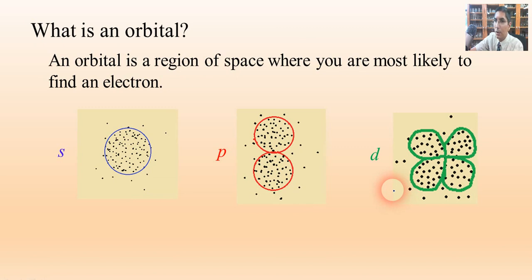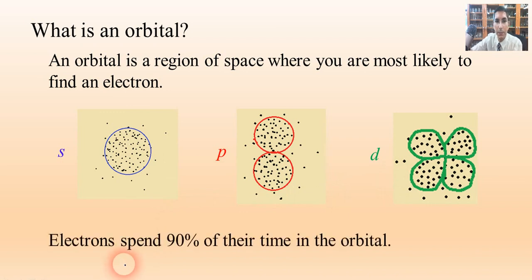Notice that electrons sometimes leave that region of space. Normally, we say that electrons will spend about 90% of their time in the orbital. They can venture out of there, just like students sometimes venture out of the hallways during the time between classes. They may go to the restroom or to the office or somewhere else. But generally speaking, electrons spend 90% of their time in the orbital. And so that's how we define that region of space that we call the orbital.